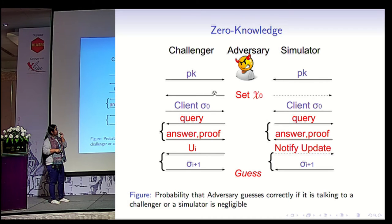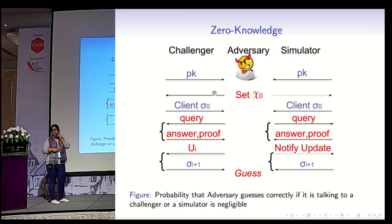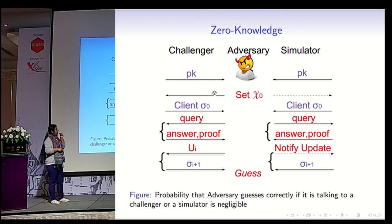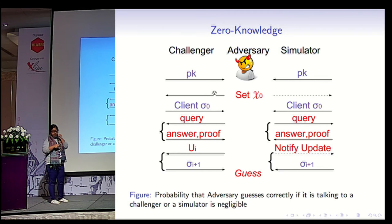The simulator comes up with the simulated digest. Finally, the adversary has to guess if it is talking to the real challenger or to the simulator. If it guesses correctly, it wins the game, and we don't want this to happen — it should occur with negligible probability.